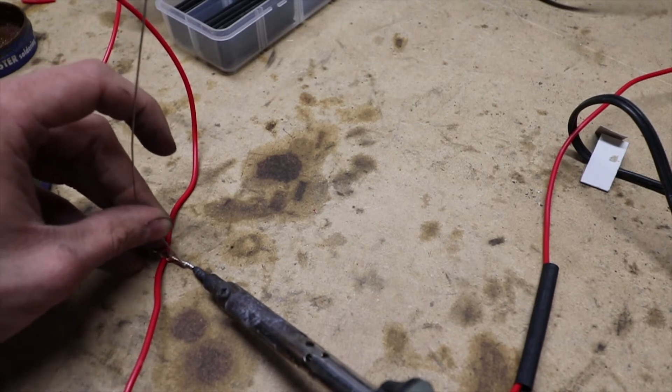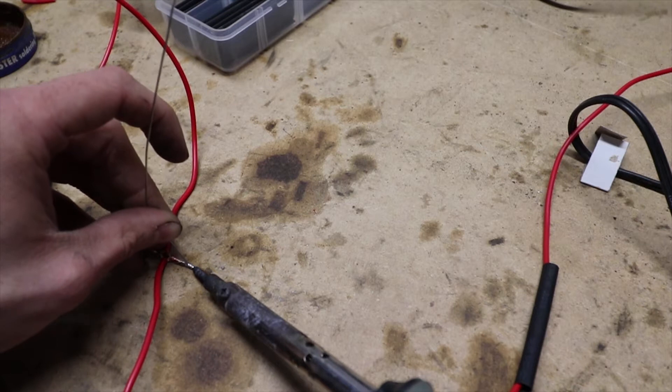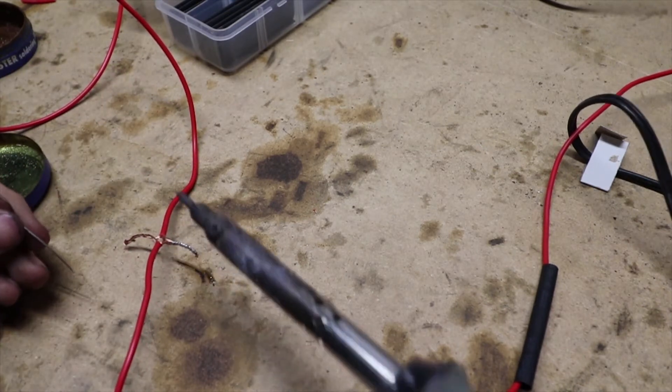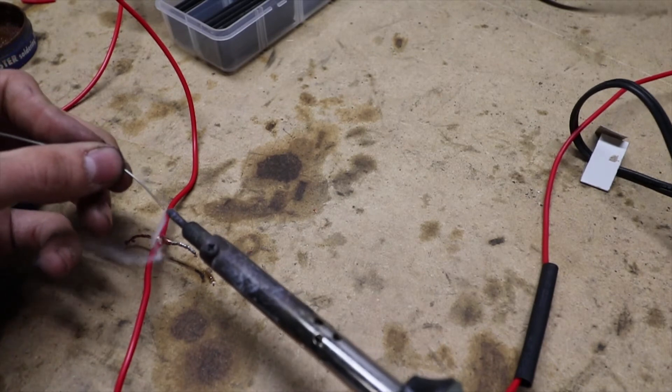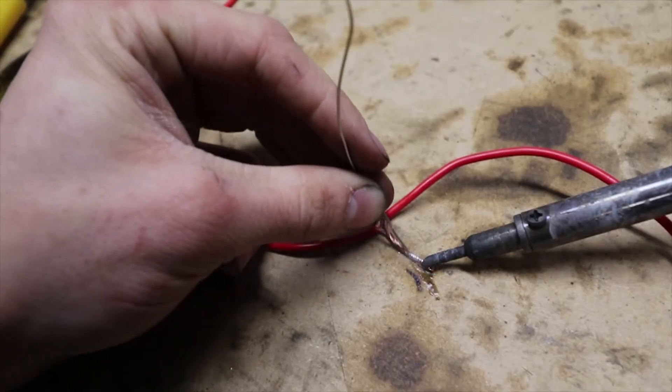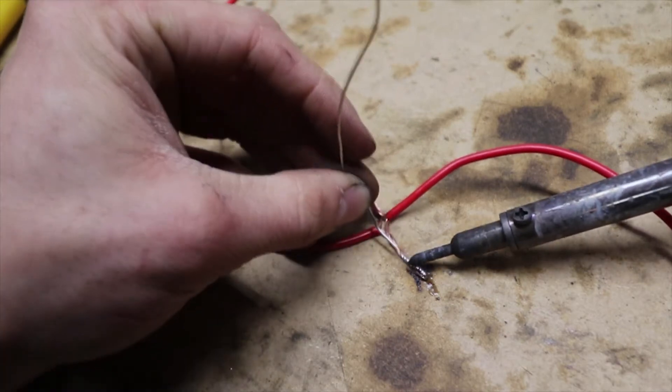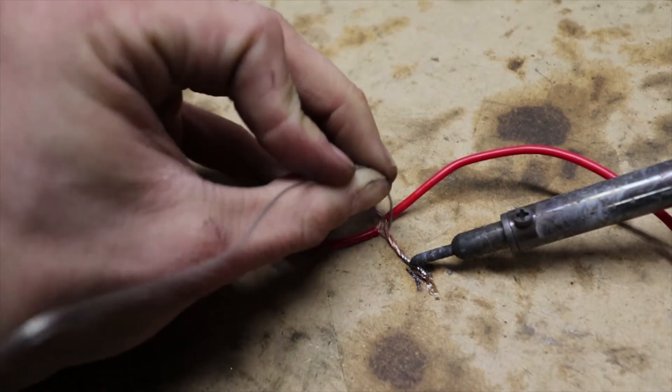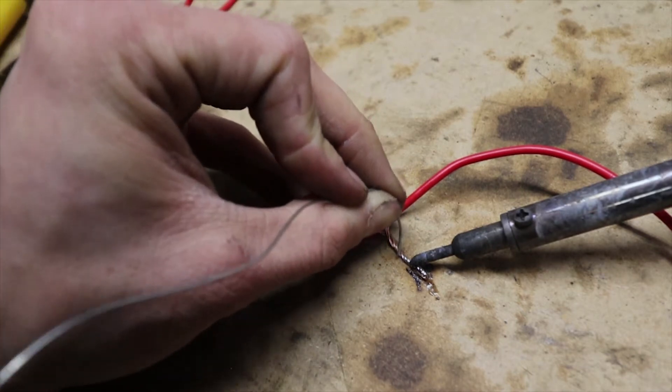Notice how I'm heating the wires and then pushing the solder into the wires rather than putting the solder on the soldering iron. So the wire should be warm enough to where the wires will actually melt the solder and you don't have to touch the solder to the soldering iron at any point.